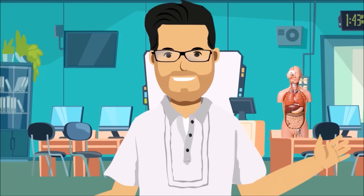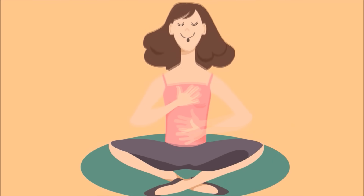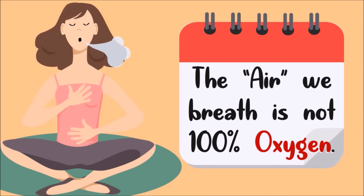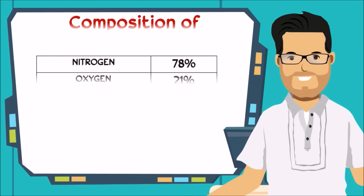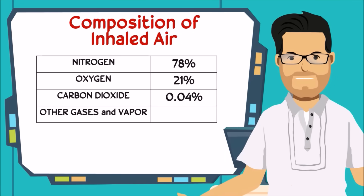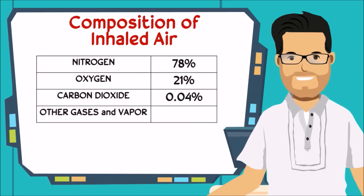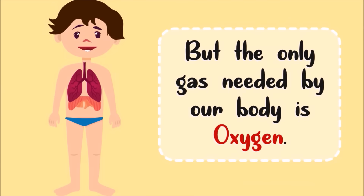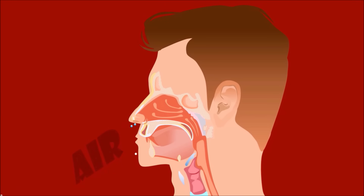Now that you know all the parts of the respiratory system, let us describe the path of air during respiration. The air we breathe is not 100% oxygen — it is actually a mixture of different gases. Air is composed of 78% nitrogen, 21% oxygen, 0.04% carbon dioxide, and other gases and vapors. But the only gas needed by our body is oxygen. When we inhale, the oxygen-rich air from the environment enters the nostrils and goes to the nasal cavities.